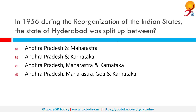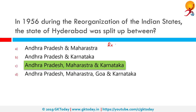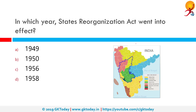In 1956, during the reorganization of Indian states, the state of Hyderabad was split up between Andhra Pradesh, Maharashtra and Karnataka. All these states had a part of what was then known as Hyderabad. The States Reorganisation Act is a term you need to remember. In which year did the States Reorganisation Act go into effect? The correct answer is again 1956. You can see in the map where the reorganization took place — the color-coded areas show Madras state, Andhra state, Hyderabad state — these were all princely states separated into states as we know them currently.